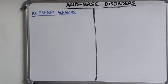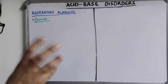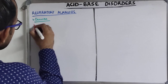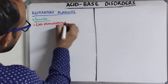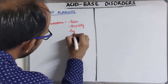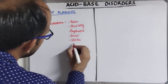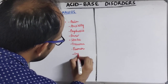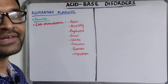The causes of respiratory alkalosis include stimulation of the CNS respiratory center. This can be due to pain, anxiety, psychosis or hysteria, fever, stroke, trauma, tumor, or infection such as meningitis or encephalitis.